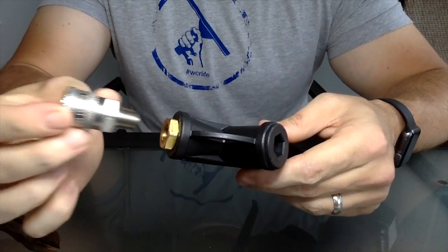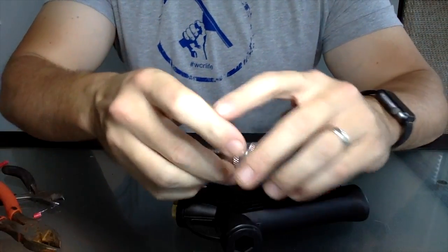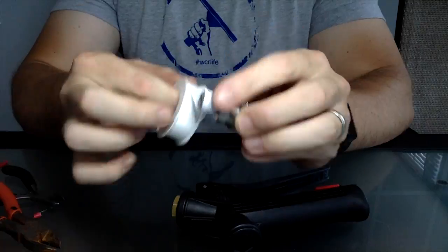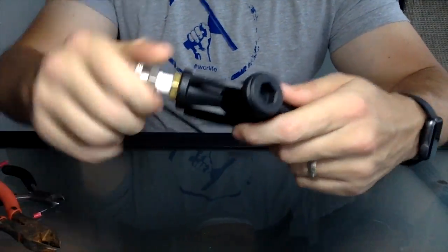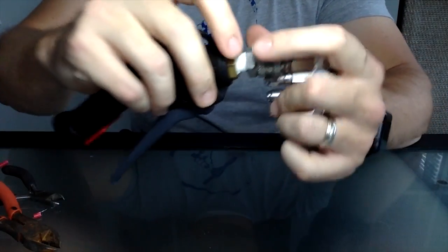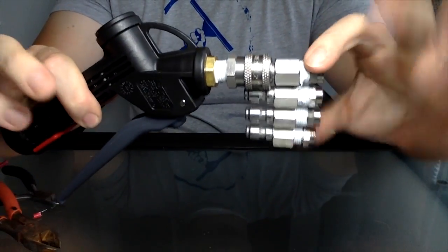After wrapping the quarter inch socket, go ahead and screw that in. Again, being careful to not over-tighten it. And now you're able to connect your J-rod directly into the tip of the gun.